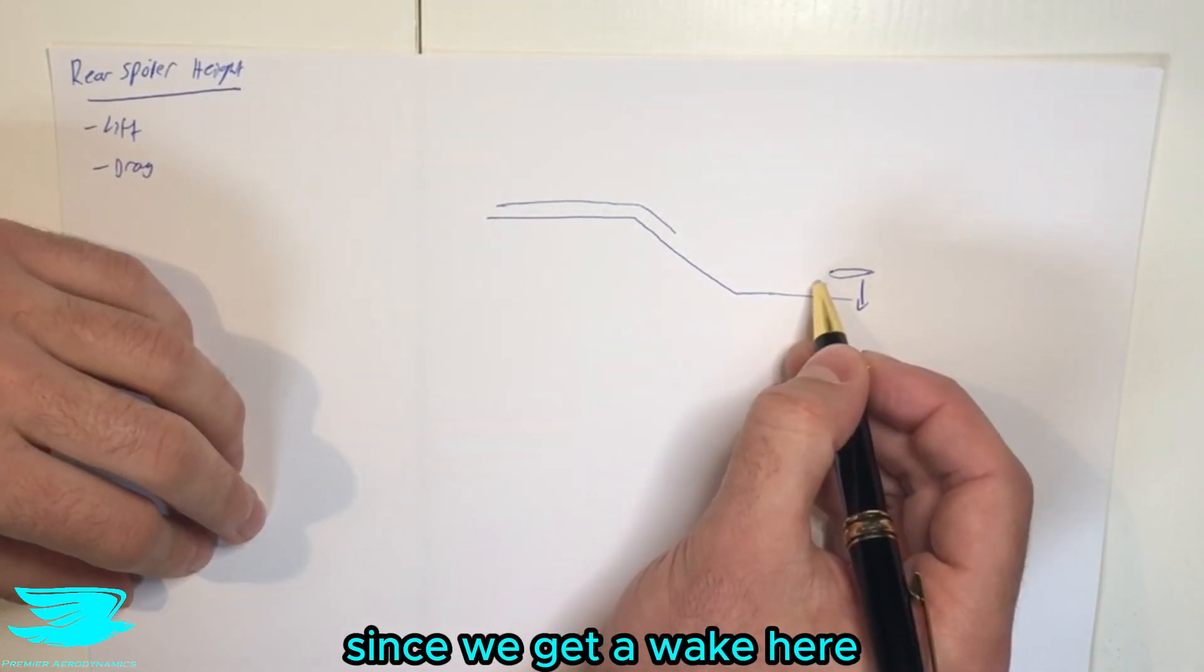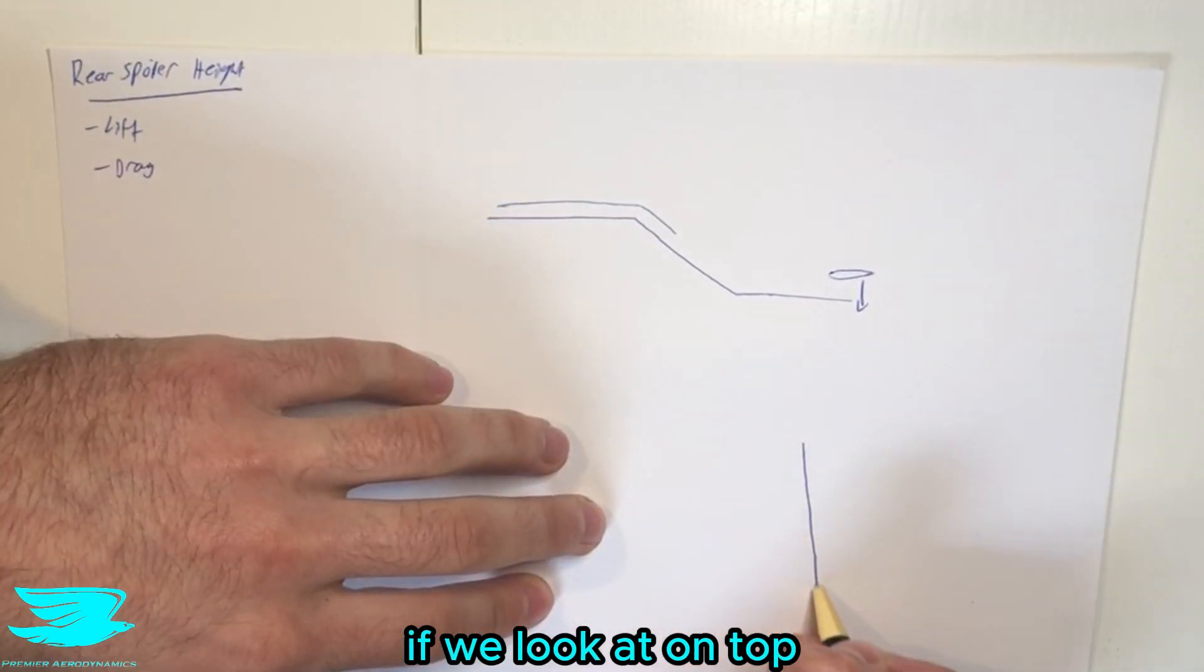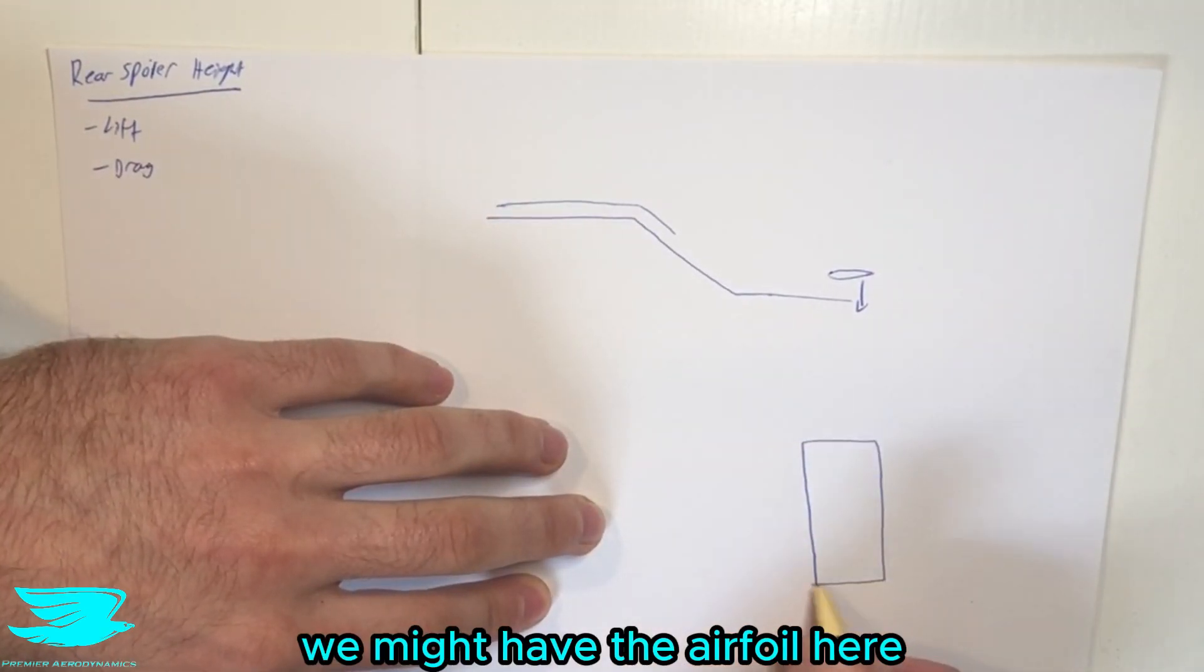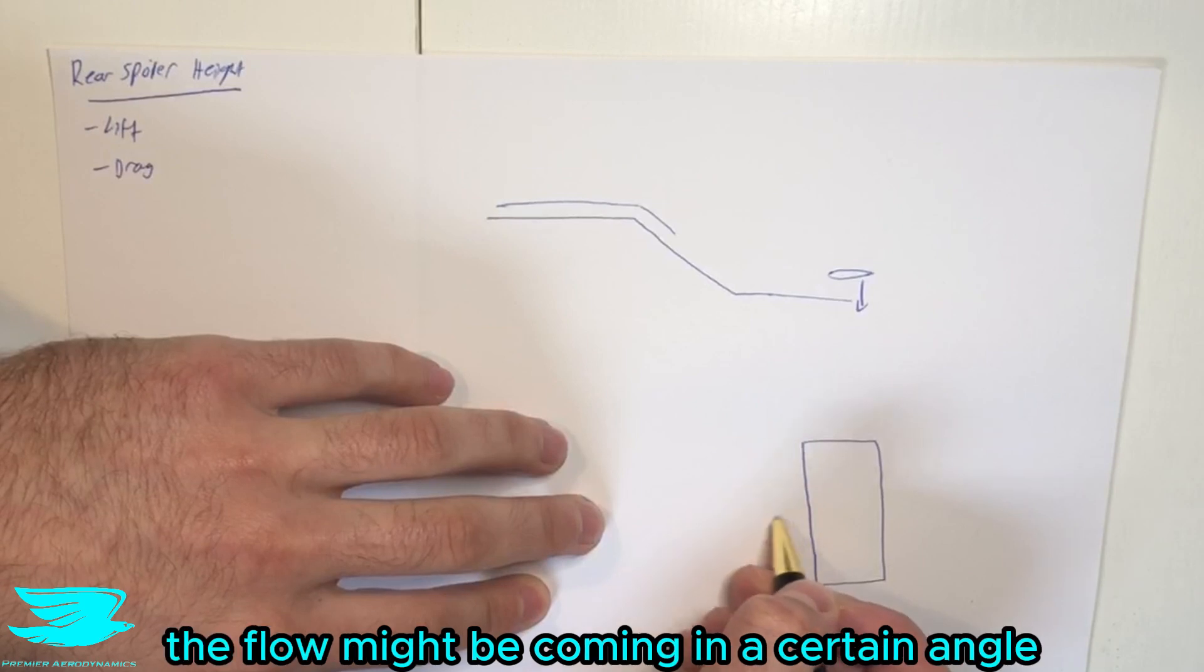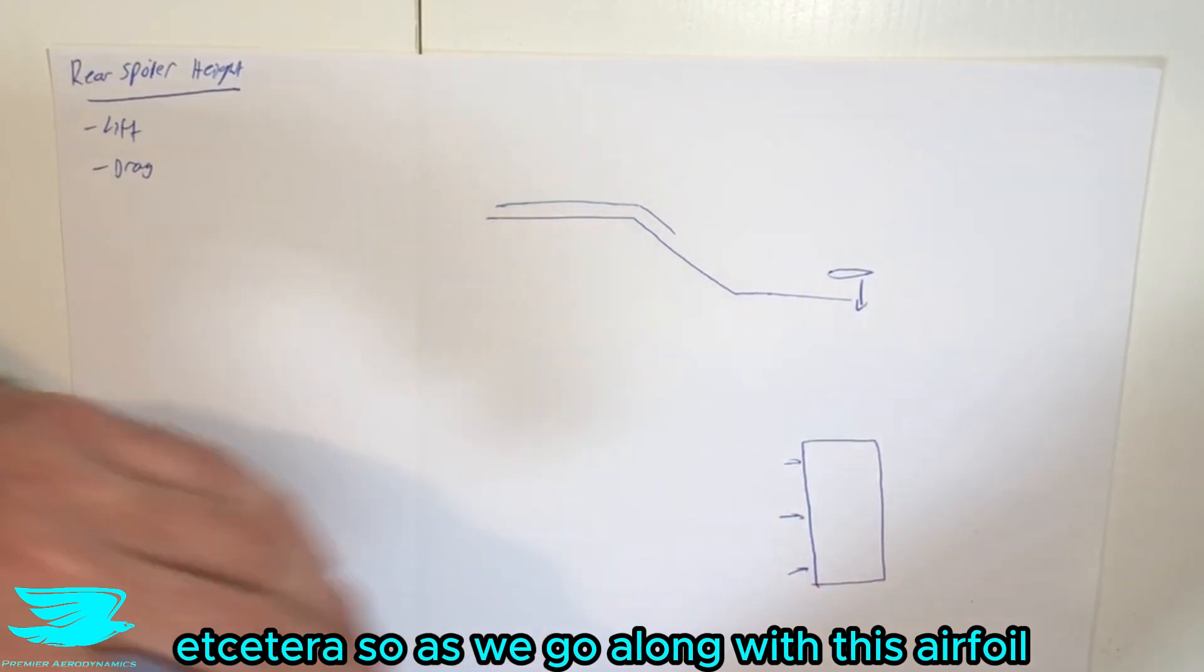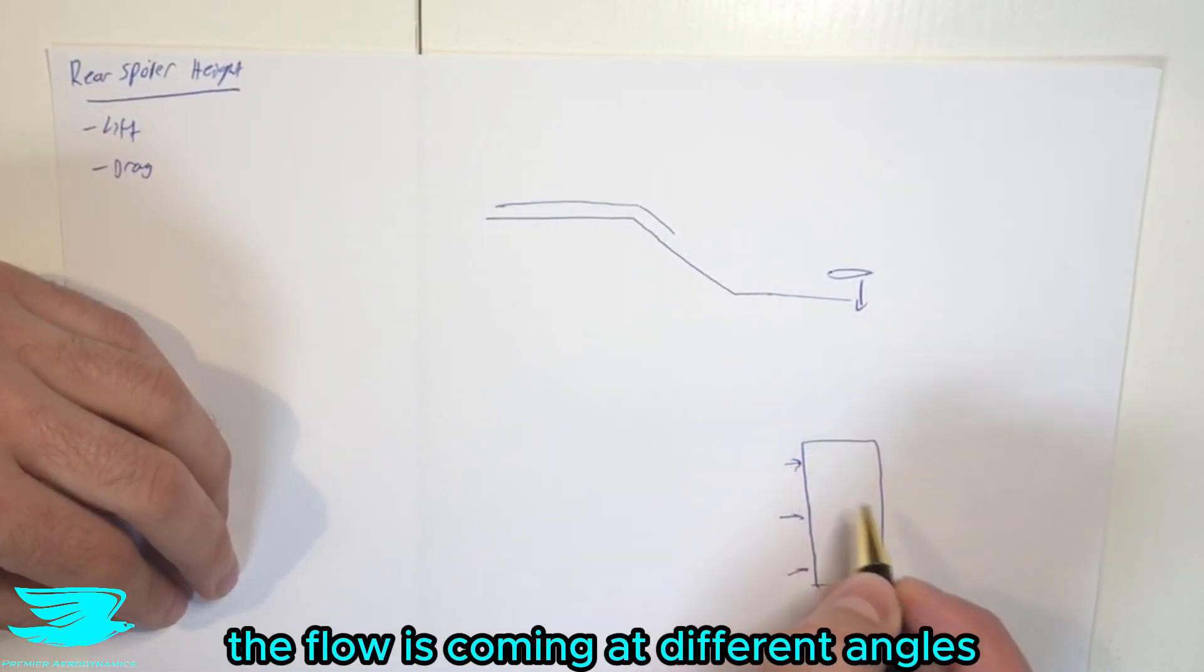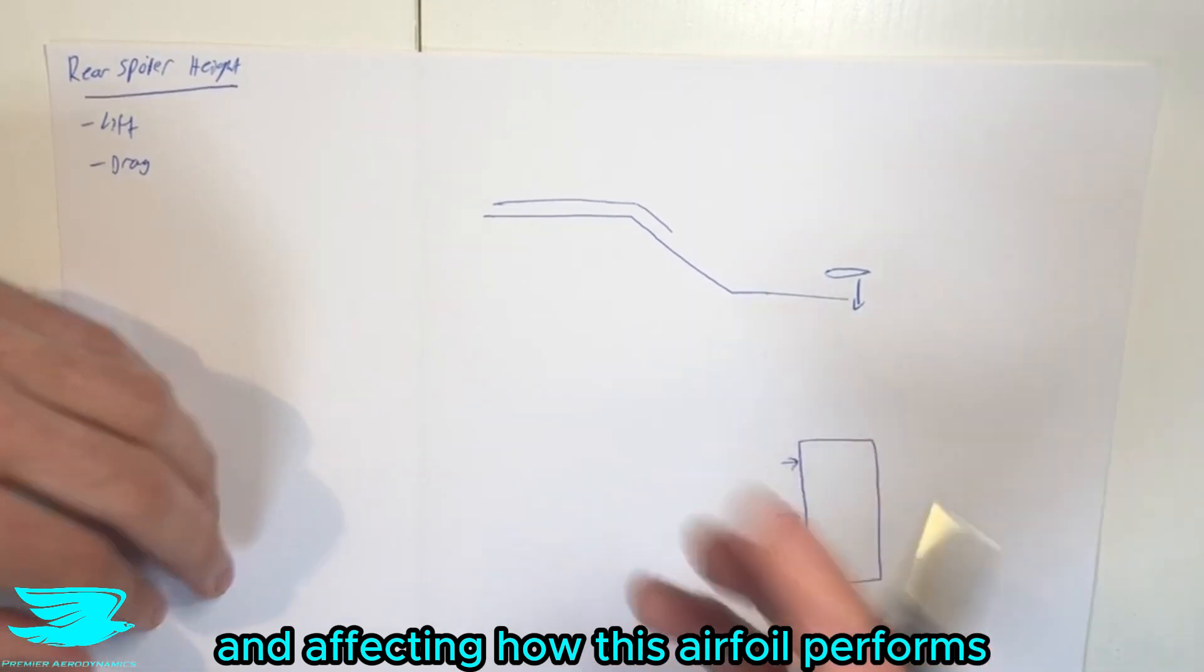So let's say we get a wake here and that means that certain points along the airfoil, if we look at on top, we might have the airfoil along here, this is the spoiler. At this point, the flow might be coming in at a certain angle, then another point is at a different angle, up and down, etc. So as we go along this airfoil, the flow is coming at different angles and affecting how this airfoil performs.